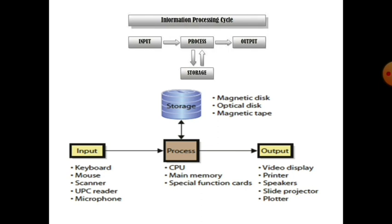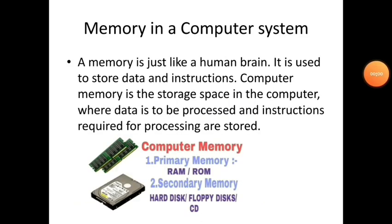Next is the processing device, that is the CPU. A computer has a very large memory to store information. Memory is just like a human brain; it is used to store data and instructions. Computer memory is the storage space in the computer where data is to be processed and instructions required for processing are stored.